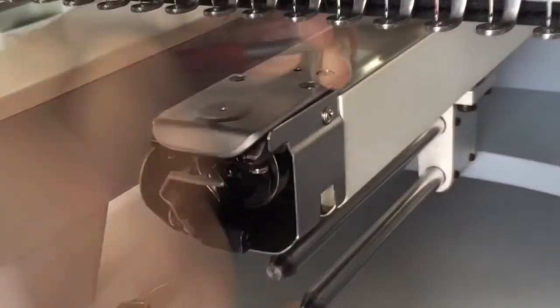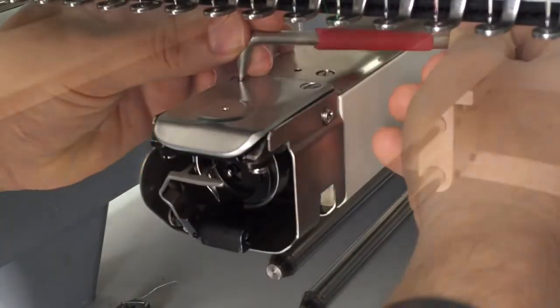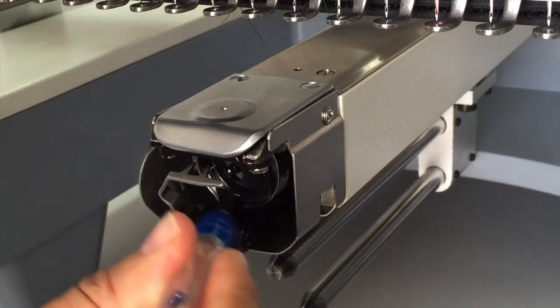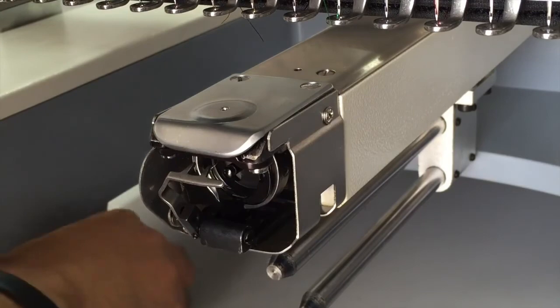Then place back the needle plate, put the two screws on top, and tighten them up. Put one drop of oil into the rotary hook and then place back the bobbin case into the hook assembly.